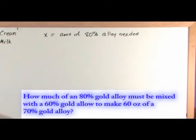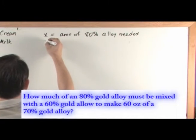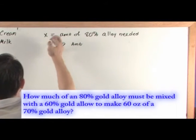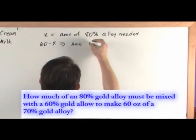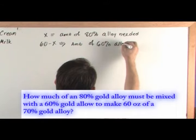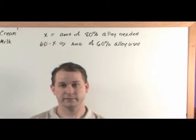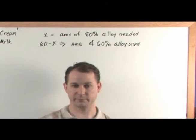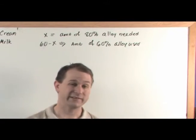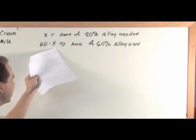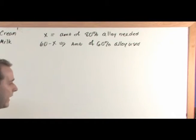Because when you do the mixture and it tells you that you're making 60 ounces of something, you know right away that 60 minus X is going to equal the amount of 60% alloy used. We know this is true because this is a mixture — you add them together and it's a zero-sum game. You have this much of this plus this much of this gives you this much of that. Since you end up with 60 ounces total, 60 minus X must be the amount of the other alloy used.